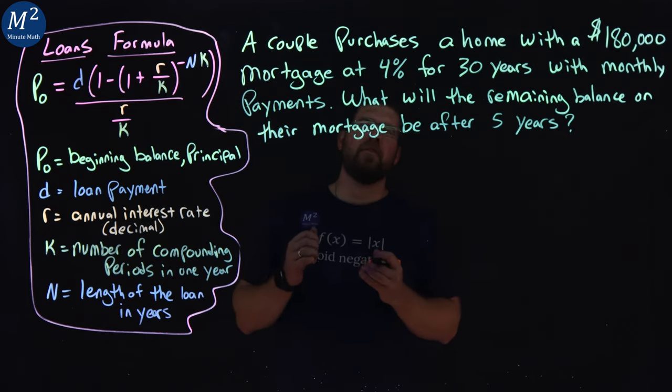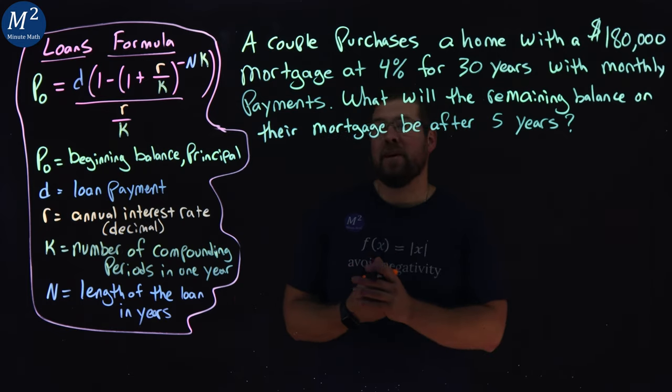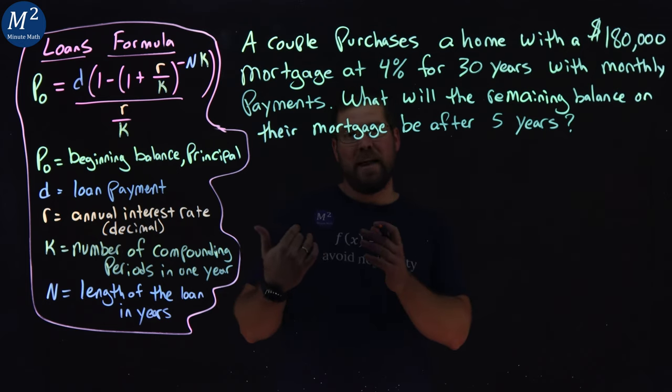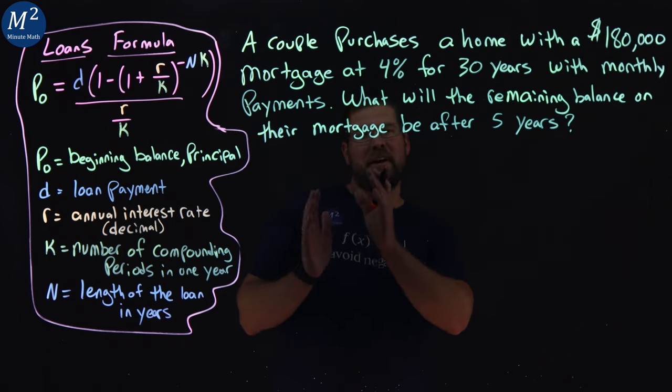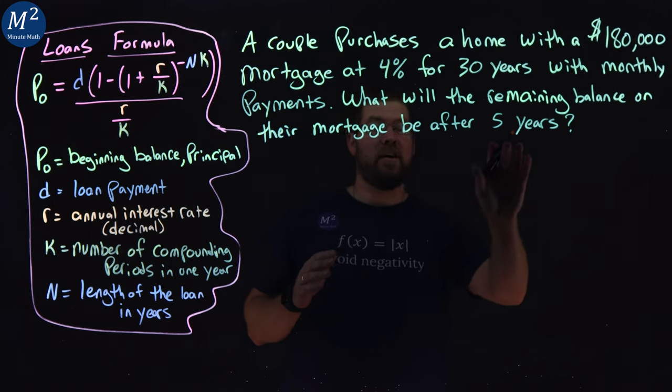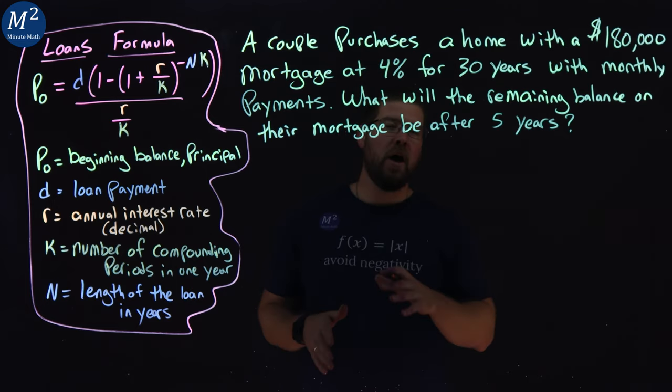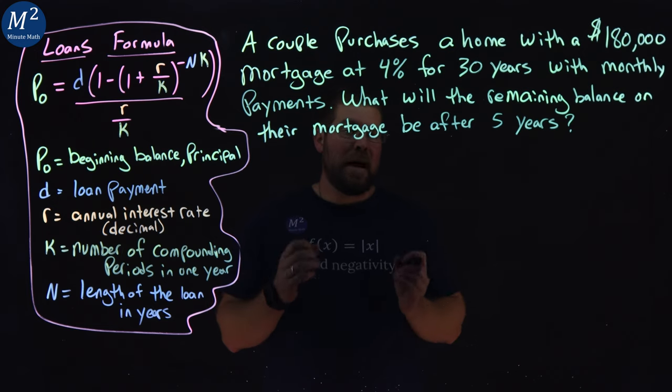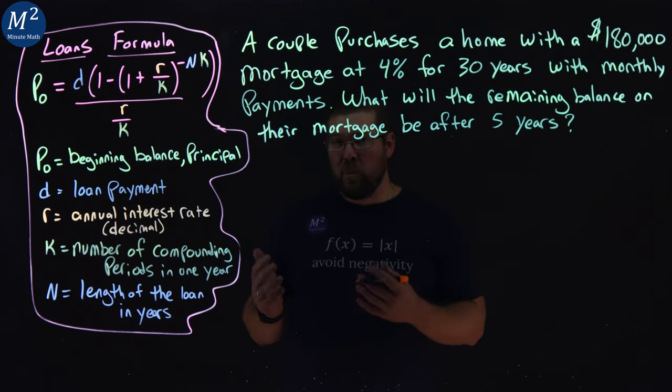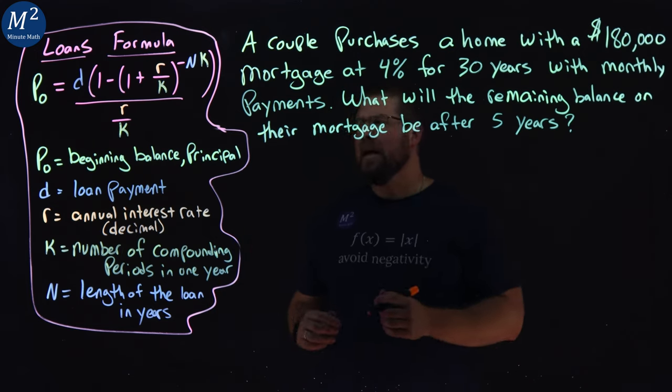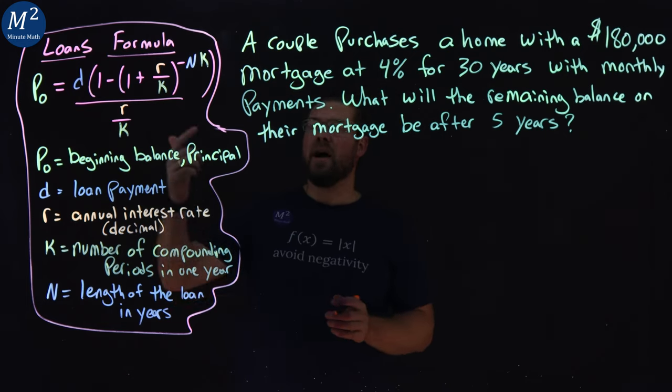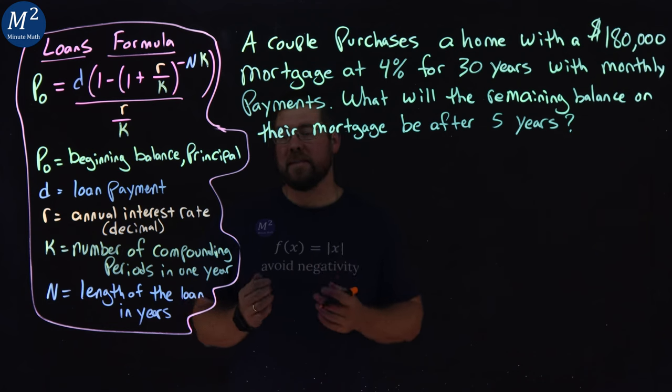To solve this problem, we first need to figure out what that monthly payment is on their mortgage. Then we have to do some math to figure out at the 25-year mark, five years later after the 30-year loan, what the remaining balance is going to be. This is a remaining balance mortgage problem or loan problem. Let's go take what we know from our scenario and apply our loans formula here to solve for the missing value.